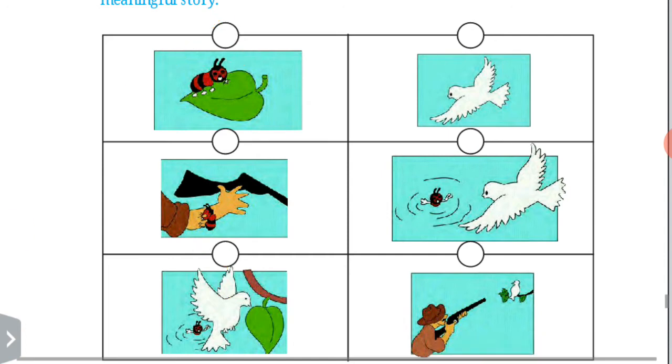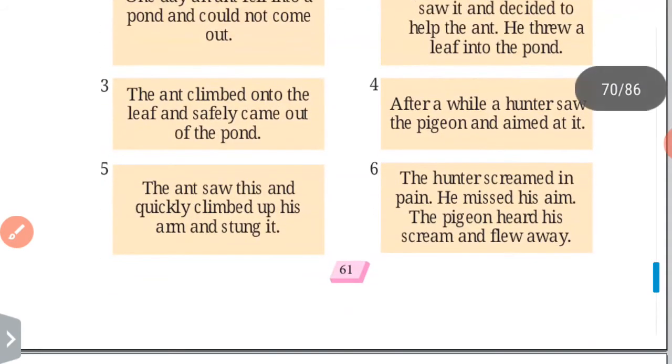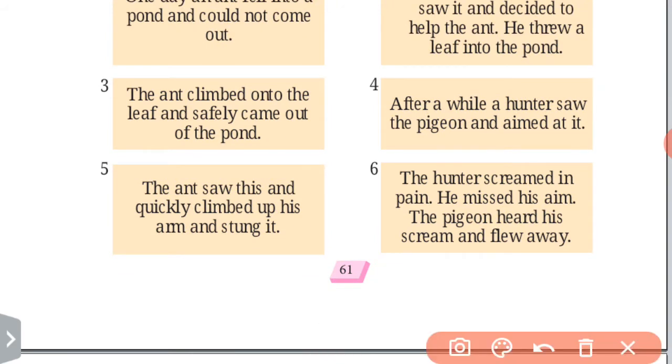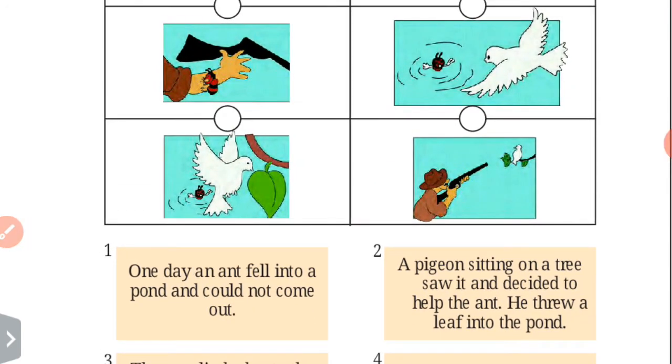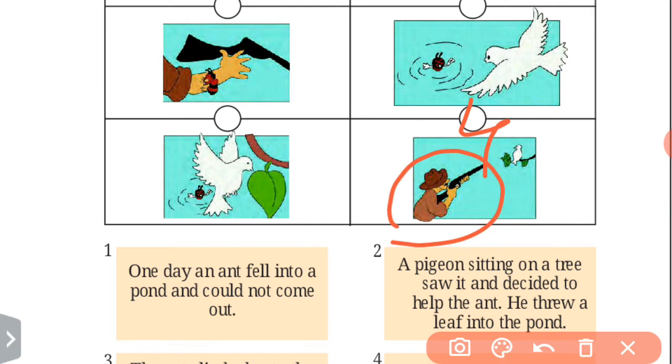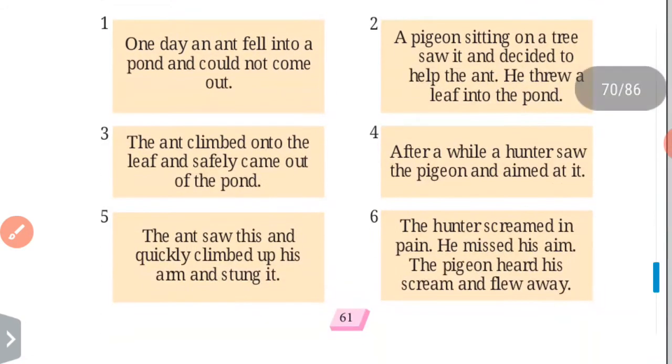Now fourth one is, after a while a hunter saw the pigeon and aimed at it. So after some time a hunter arrives there and he targets the pigeon. He wants to hunt it. See here, fourth number is here. This is fourth number. As you can see here, he targets the pigeon because he wants to hunt it.